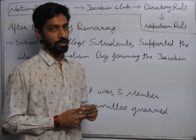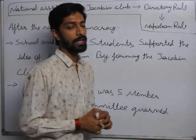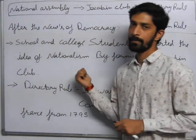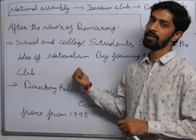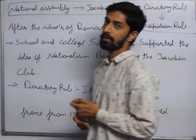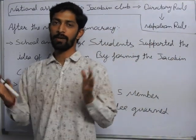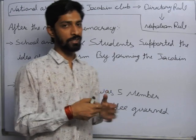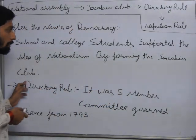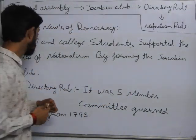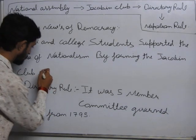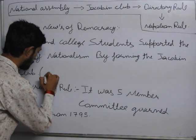Students who were in schools and colleges formed a new club. What was the name of the club? They did a lot to promote nationalism in France and supported the whole country. The name of the club was the Jacobin Club. The leader of the Jacobin Club was Maximilian.